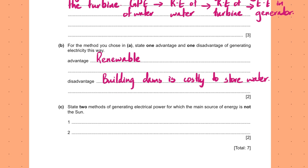State two methods of generating electrical power for which the main energy source is not the sun. Nuclear energy — the main energy source is not the sun, it's uranium. And tidal power — tidal energy is due to the tides caused by the moon, not the sun.